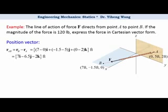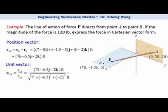From here we can calculate its unit vector u_AB, which equals to r_AB divided by its magnitude. Notice how the unit of foot gets cancelled out.